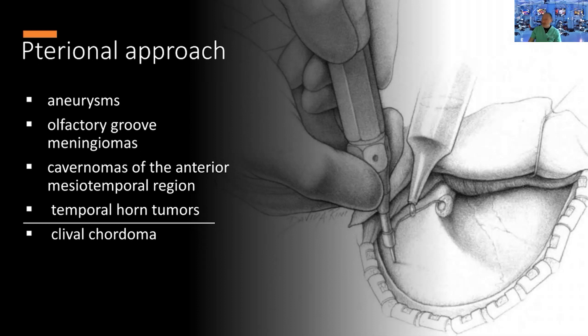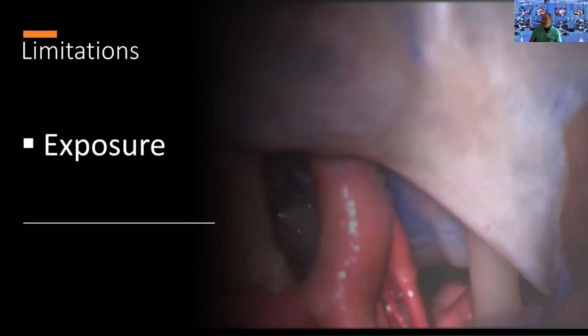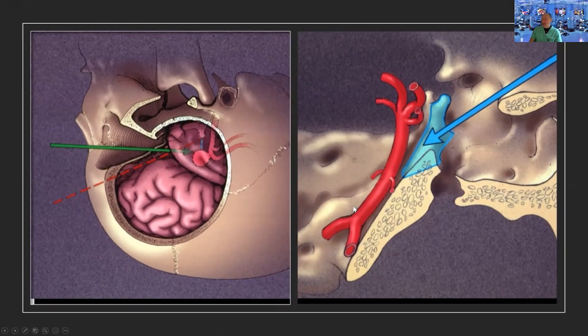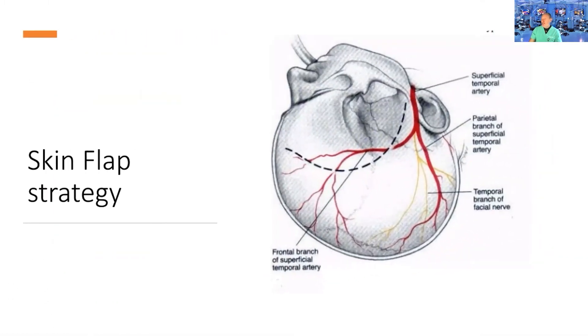There's a long list of lesions accessible with the pterional approach. The main limitation is that the corridors are very small, making it difficult to work properly between them. We have different maneuvers that allow us to increase these corridors.